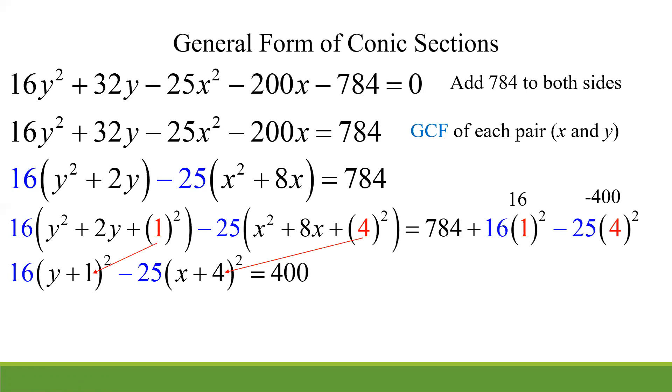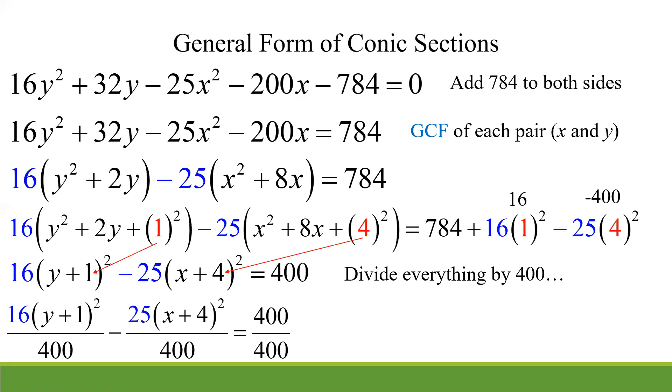Simplify the right-hand side. And at this point, I'm just going to divide by 400, to equal to 1. And if I do that, 16 over 400, 25 over 400, those simplify nicely to that. And all of a sudden, that should ring a bell as a hyperbola because we have that minus sign in between those two terms. So remember, that's kind of the dead giveaway for hyperbolas. And then you can find all of our attributes and graph.